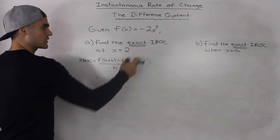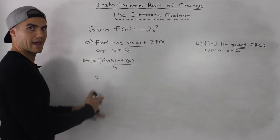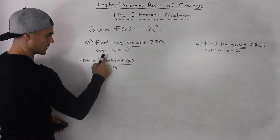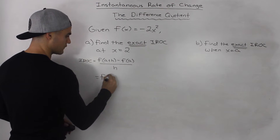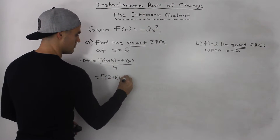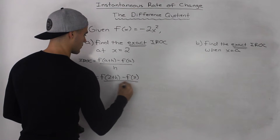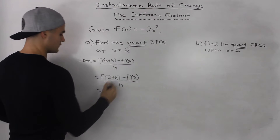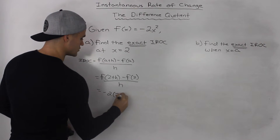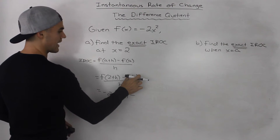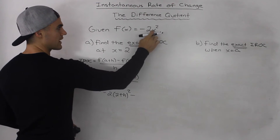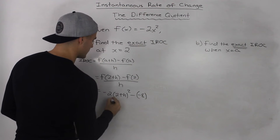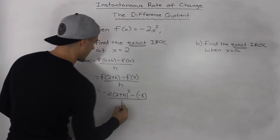Since they want the exact one, we know we're going to have to use the difference quotient and algebraically manipulate it. Since they want it at a specific point of 2, our a value is 2, so we plug in f(2+h) minus f(2), all over h. Plugging in (2+h) for x gives us -2(2+h)², minus f(2), which is -2(4) = -8, all over h.